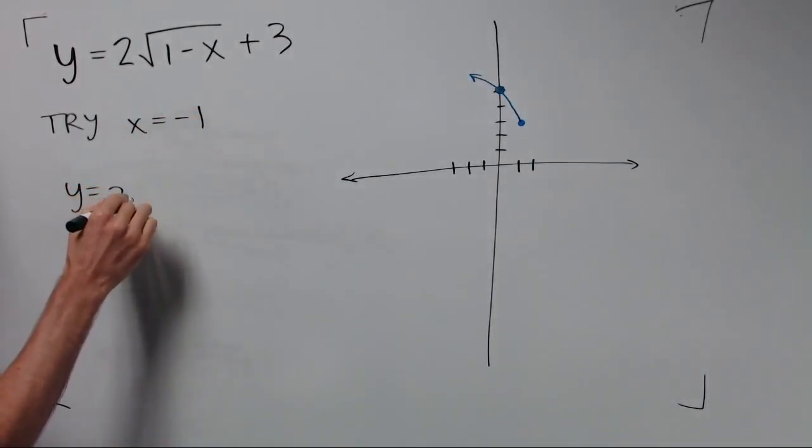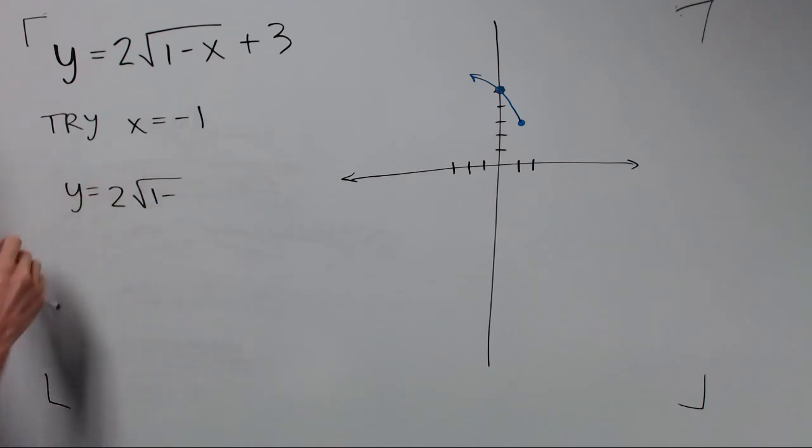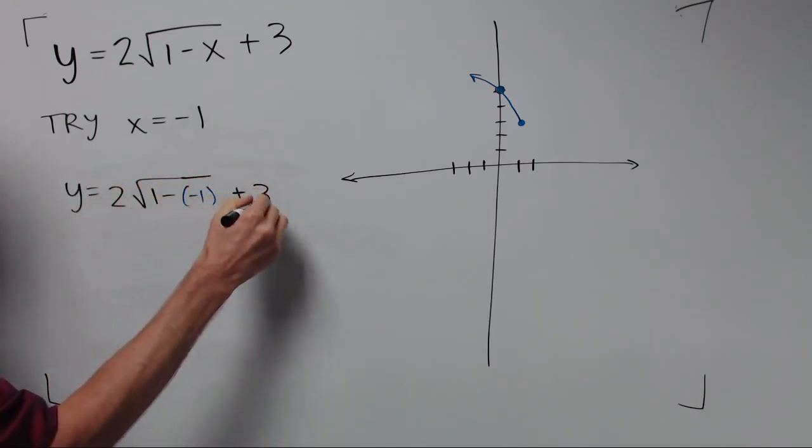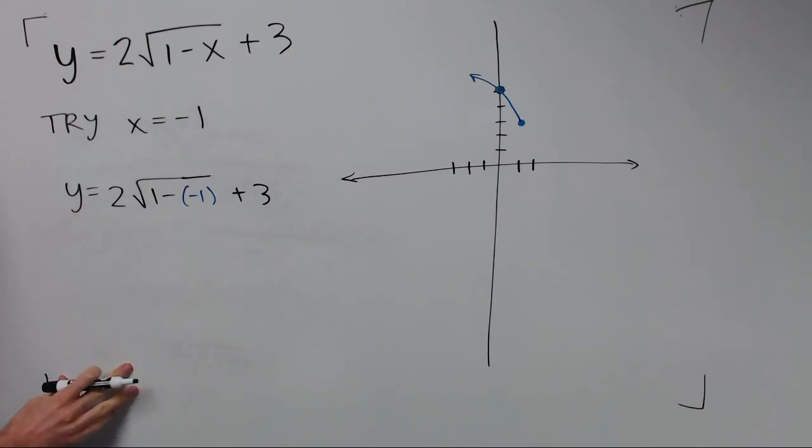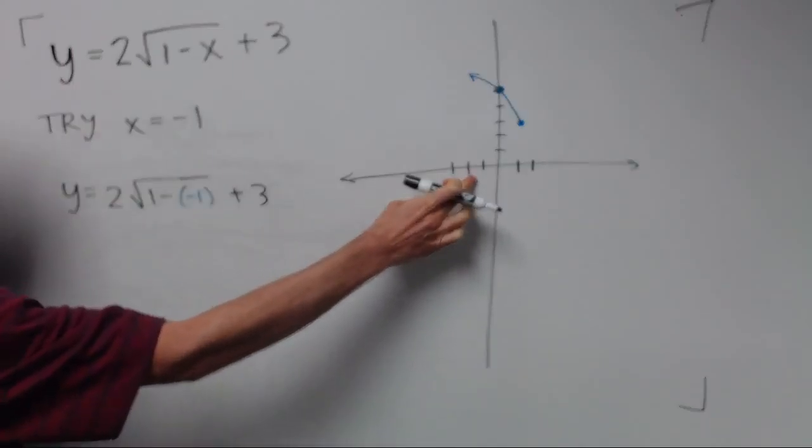And when you do x equal to negative 1 you get 1 minus negative 1, which is 1 plus 1, which is 2. And square root of 2 is not a nice number. So that's not going to be a good whole number value. So we go further, go to negative 2.